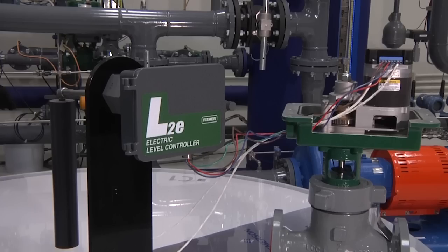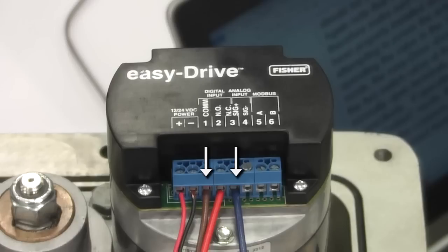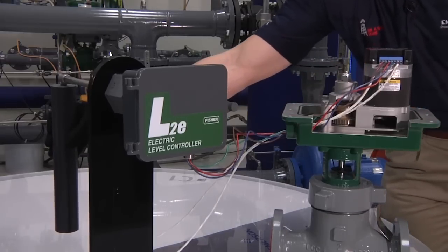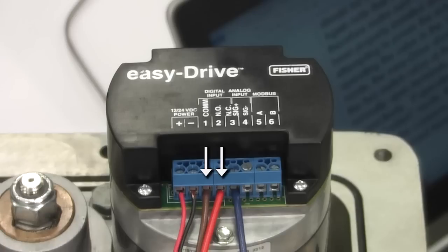Notice when the controller is not activated, terminals one and three are in continuity and the valve is closed. For this example, we will trigger the EZ-Drive by activating the L2E. Once the L2E has been activated, continuity is made across terminals one and two, and the valve begins to open.